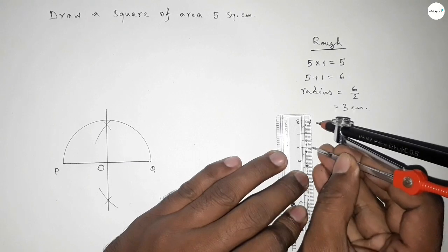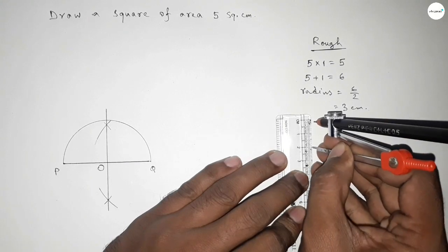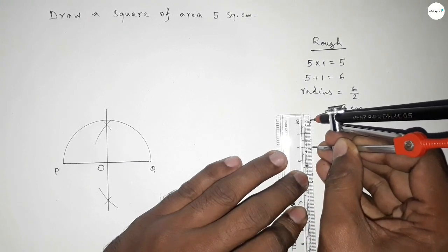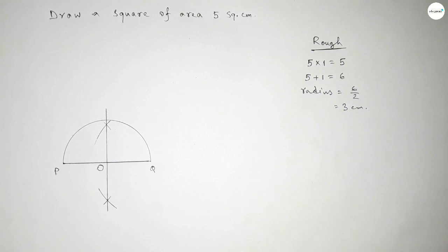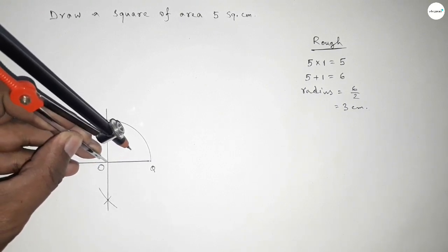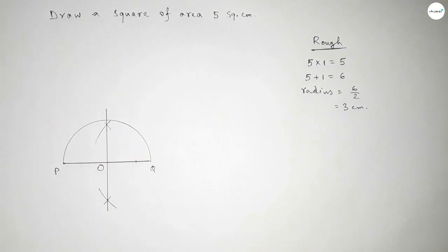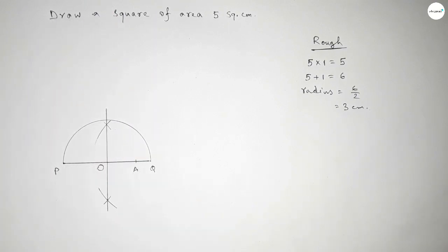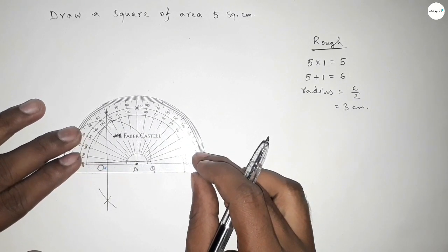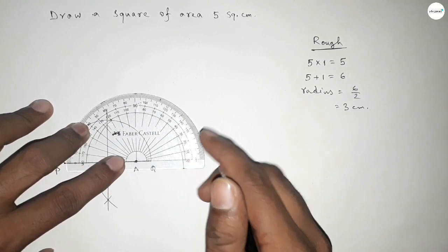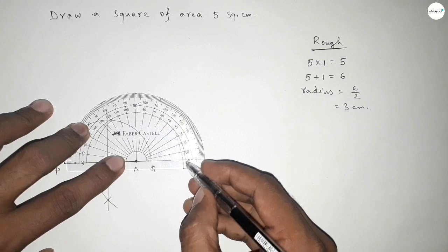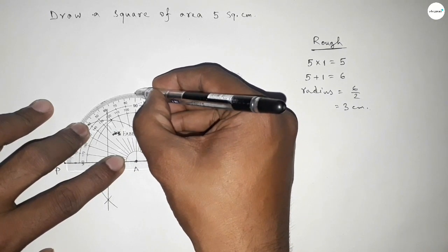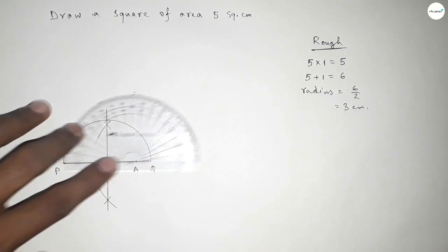Next, taking a length of 2 centimeters by using a scale, and putting the compass on the point O and cutting here. So taking this as point A. Next, we have to draw a 90 degree angle at point A using a protractor. This is 90 degrees.